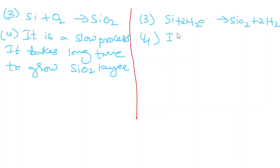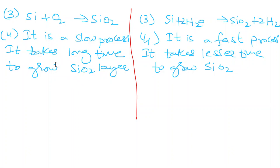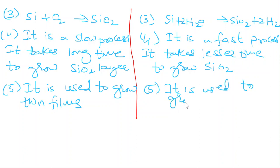Here, it is a fast process, it takes less time to grow SiO2. So as it is a slow process, it takes a long time, it is used for making thin films. Since it is a fast process and takes a lesser time, it is used to grow thick films.